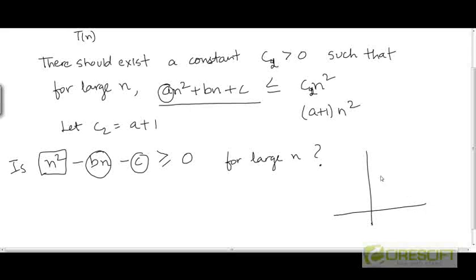Another way to see this is that since this is a quadratic expression, we know that if we plot this expression n² - bn - c as a function of n, we are going to get some parabola. Because the coefficient of n² is equal to 1, which is a positive coefficient, the parabola is going to open upwards. For values of n to the right of the second root of this quadratic expression, we can see that the value of this expression is going to be positive. It is going to be above 0.